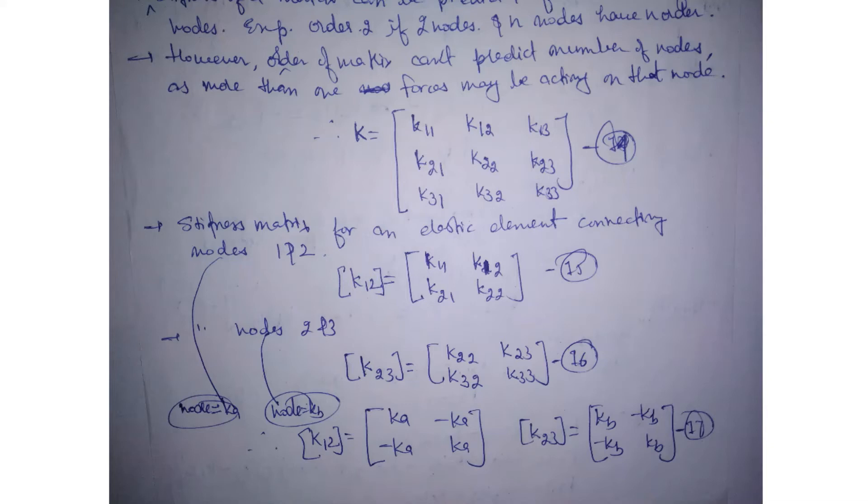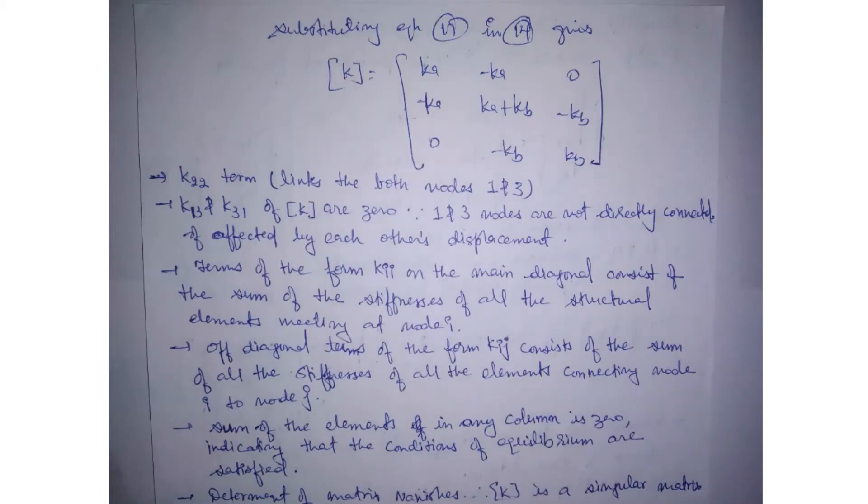Here we will see from node 1 to node 2 is Ka stiffness matrix. We will create a single matrix, 2 into 2 matrix. Similarly, node 2 to 3 will create Kb. And we will substitute in the equation, so we will have this simple solution that will be the stiffness matrix for two springs. Here we will see that the K22 term is linked to both nodes 1 and 3. The middle term is the K22 term. Node 2 is connected to nodes 1 and 3.